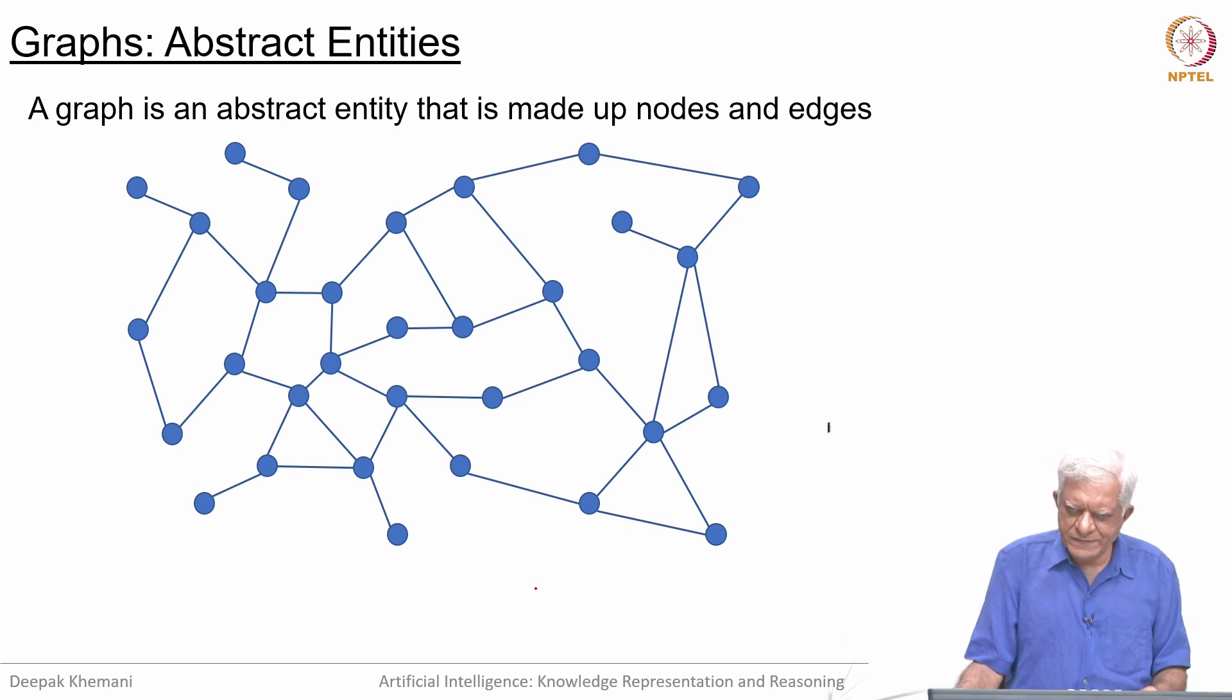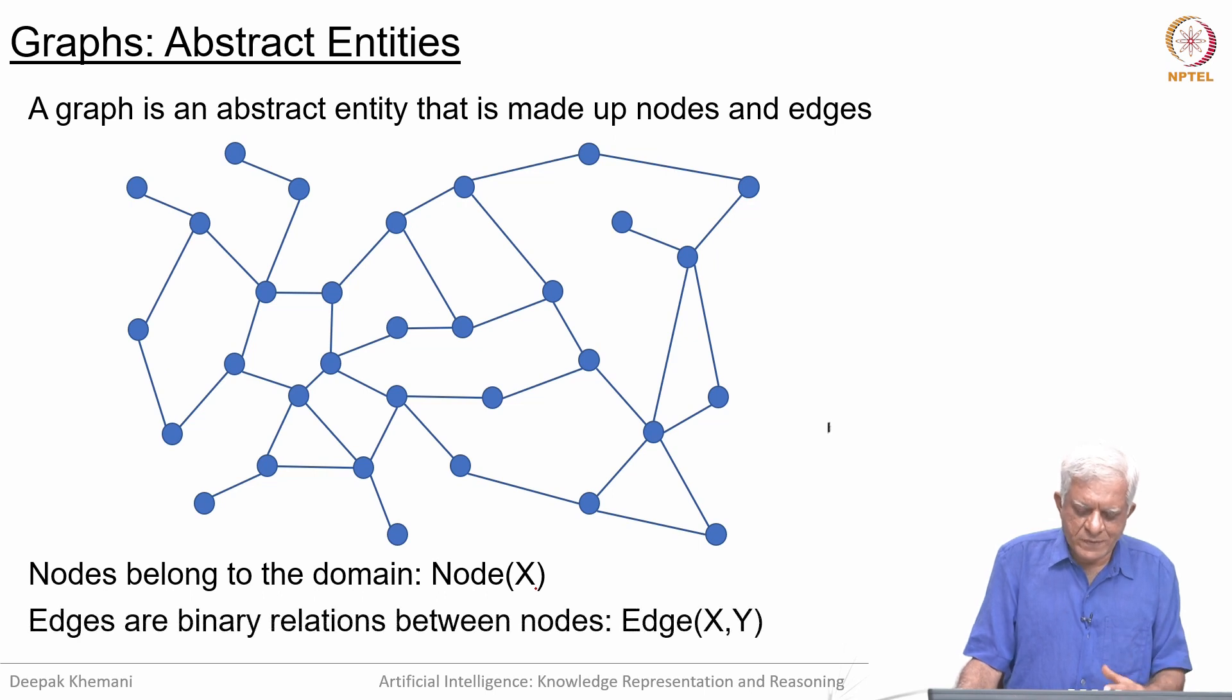People talk of hyper graphs where there are hyper edges which can connect more than two nodes, but let us keep it simple here. Nodes exist in the domain and they belong to a category called node. We will model edges as binary relations between nodes.